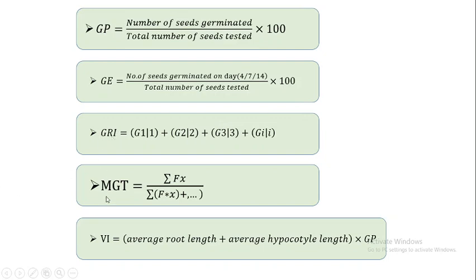The fourth one is mean germination time. This is equal to the summation of (number of seeds germinated multiplied by the number of days), divided by the summation of number of seeds germinated. Each day's seed count is multiplied by its day number, and so on. This gives you the mean germination time.